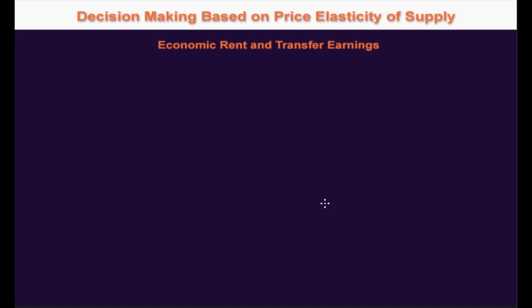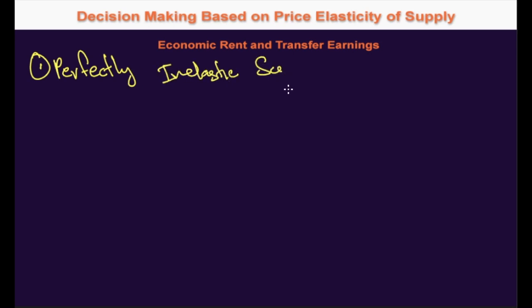In this video we are going to discuss the concepts of economic rent and transfer earnings for different degrees in price elasticity of supply. The first one would be for perfectly inelastic supply. When the total supply of a factor is completely fixed or inelastic, no price needs to be paid in order to induce it to be available for production. Land is the main example of a factor of production whose total supply is fixed and completely inelastic.